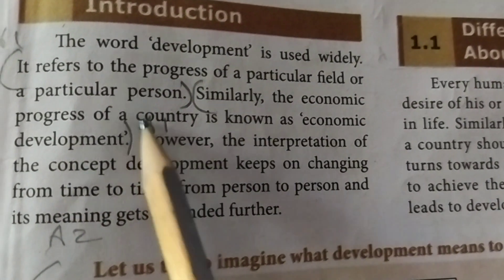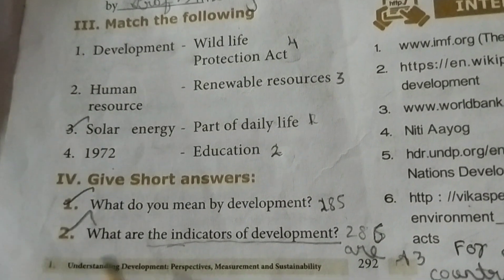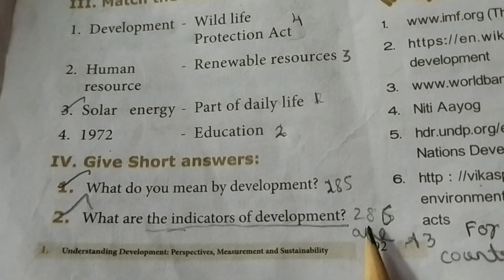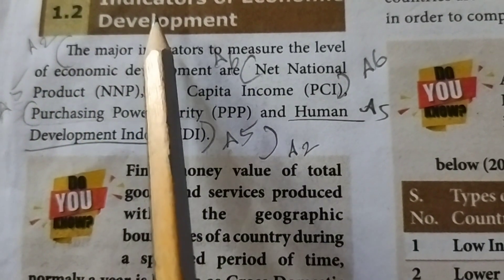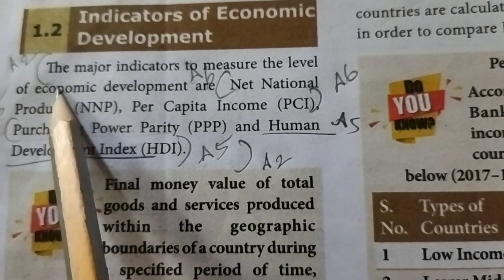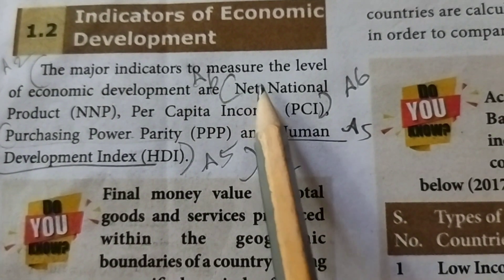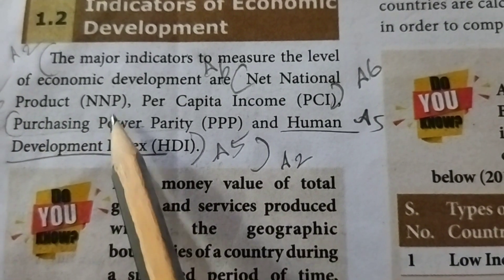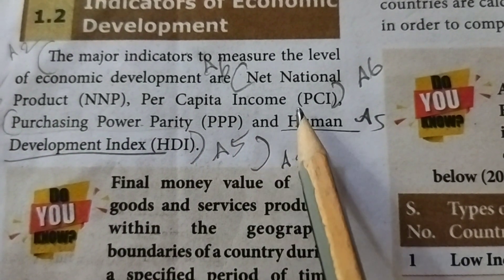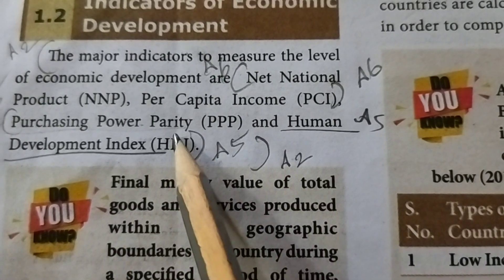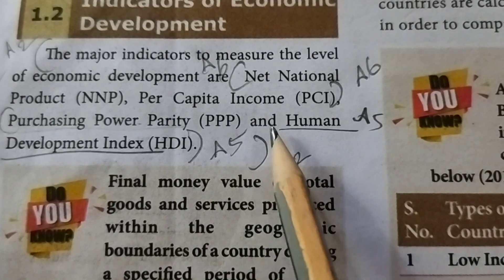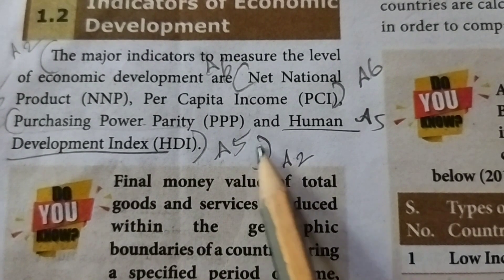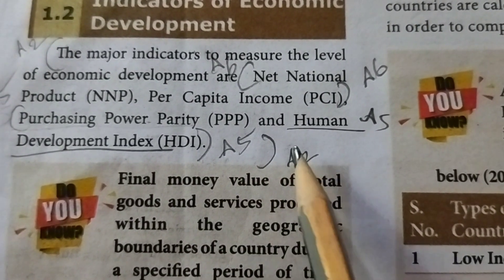Second one: what are the indicators of development? (Page number 286.) The major indicators to measure the level of economic development are: Net National Product (NNP), Per Capita Income (PCI), Purchasing Power Parity (PPP), and Human Development Index (HDI).